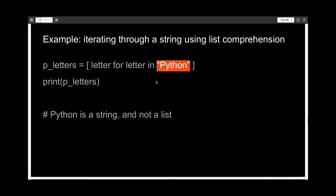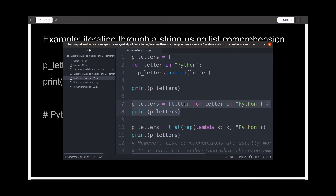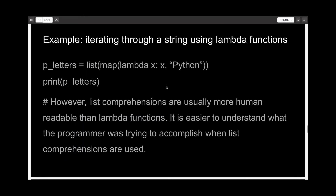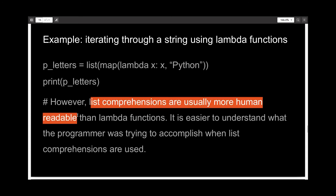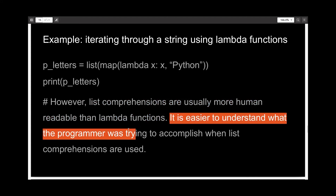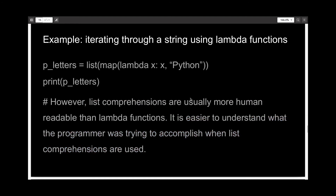Keep in mind that Python here is a string and not a list, but list comprehension still works because it is smart enough. I have also used Lambda expressions to iterate through a list just for comparison — initializing platters to a list with the values of the map function with the lambda argument of x, x being the letters in the string Python. But keep in mind that list comprehensions are more human readable than lambda functions. It was much clearer to understand what I wanted to do using list comprehensions.